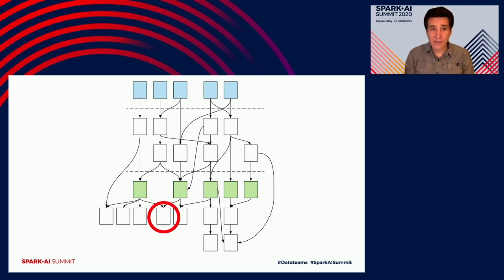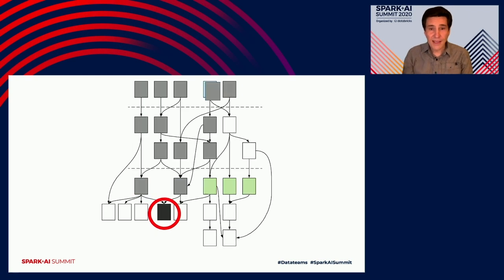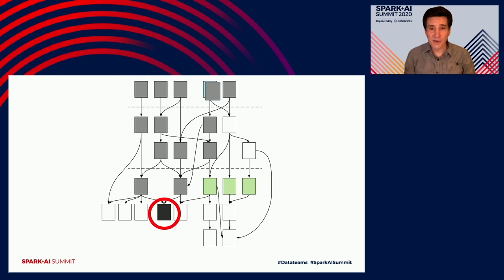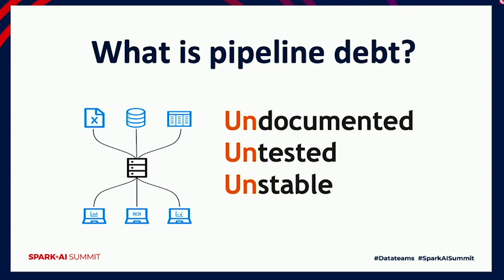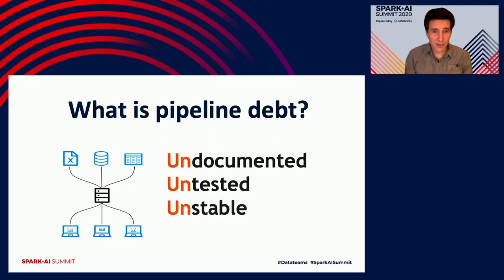Debugging is a problem as well. Let's say you find a problem in one of the nodes — if you're lucky, you found it. If you're unlucky, it's your execs or your users who found the problem. To debug it, you have to trace back from that node through every node in the pipeline that it has a dependency on. This robs you of time, and much worse, it robs you of the trust of users who rely on your data.